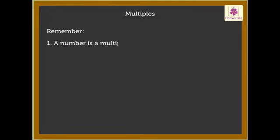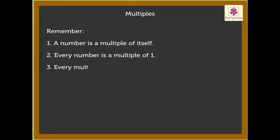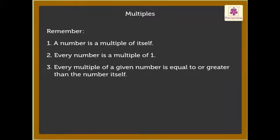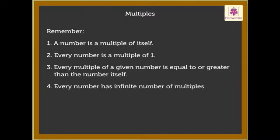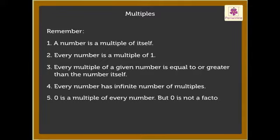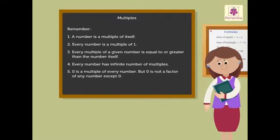Remember, a number is a multiple of itself. Every number is a multiple of 1. Every multiple of a given number is equal to or greater than the number itself. Every number has an infinite number of multiples. 0 is a multiple of every number. But 0 is not a factor of any number except 0. Revising factors and multiples was fun!